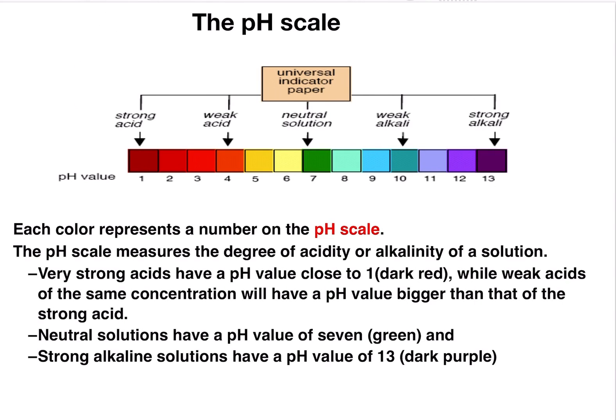In the next part of acids, bases, and salts, we are going to study the properties of acids and bases, acidic oxides, basic oxides, and amphoteric oxides, as well as more about salts. This is only part one, so please see the other part to understand the whole chapter on acids, bases, and salts. Thank you, students — I hope you liked it.